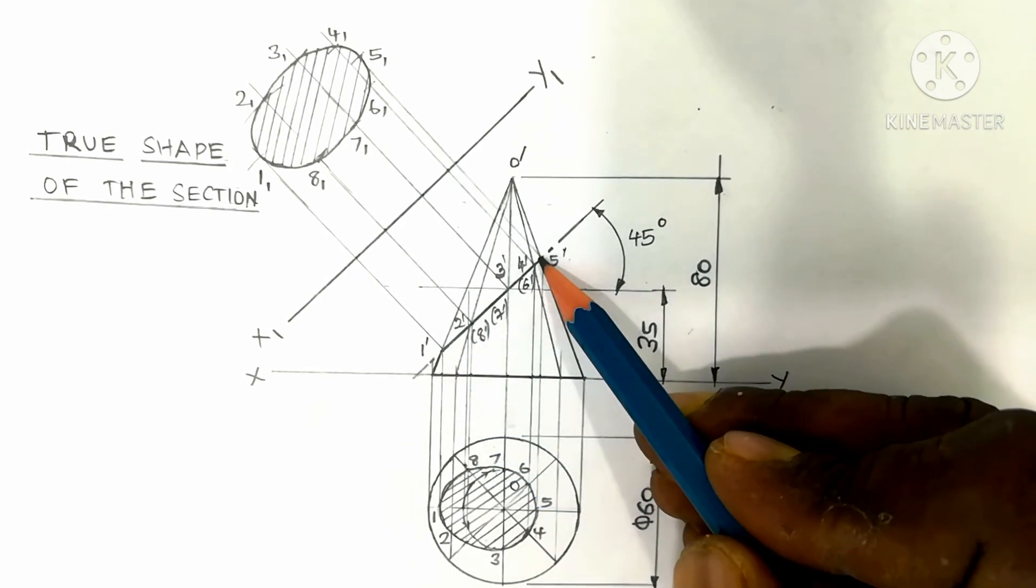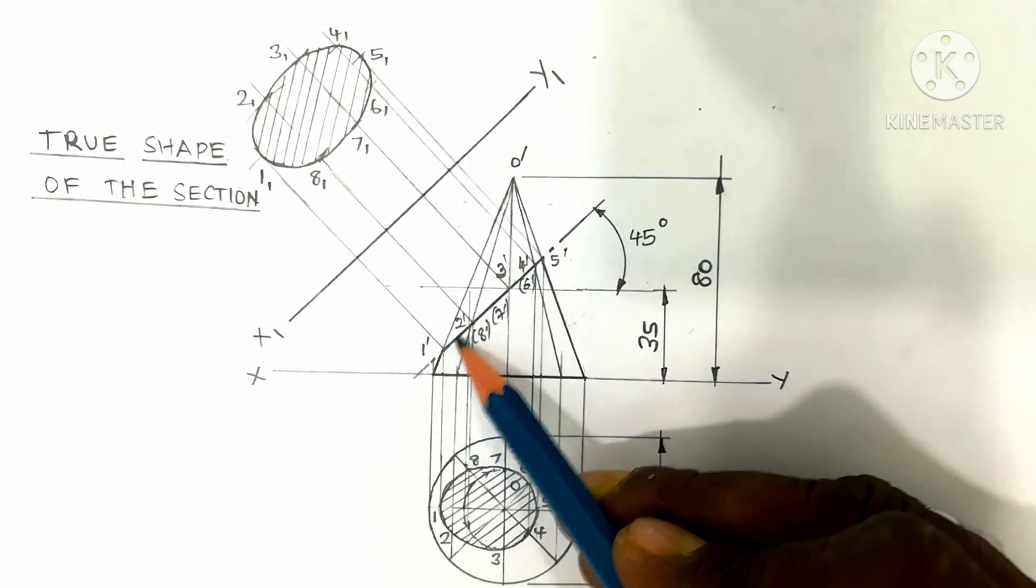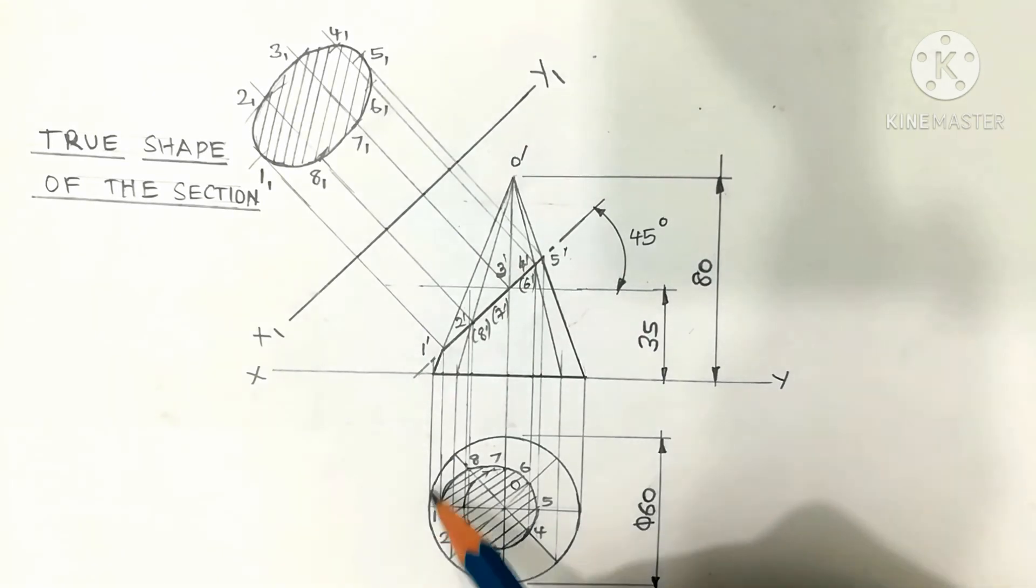The object line is the boundary of the object. Drawn by using HB pencil.